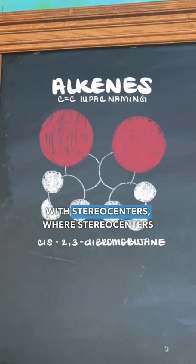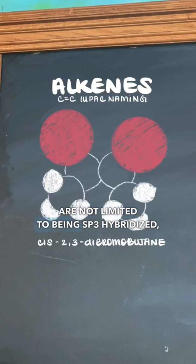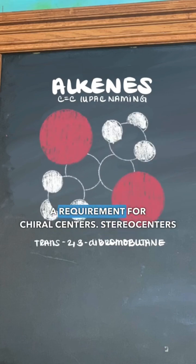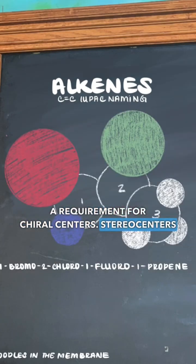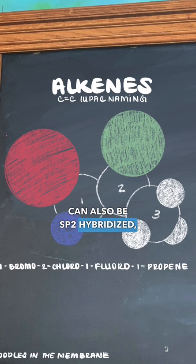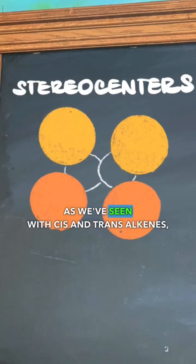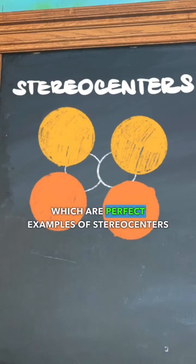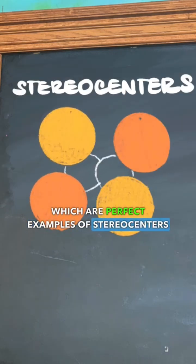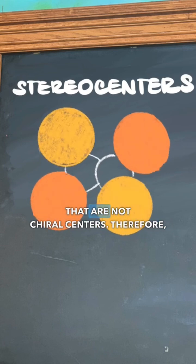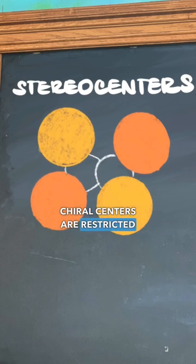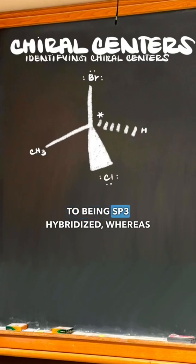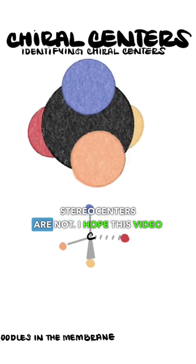The difference lies with stereocenters, where stereocenters are not limited to being sp3 hybridized — a requirement for chiral centers. Stereocenters can also be sp2 hybridized, as we've seen with cis and trans alkenes, which are perfect examples of stereocenters that are not chiral centers. Therefore, chiral centers are restricted to being sp3 hybridized, whereas stereocenters are not.